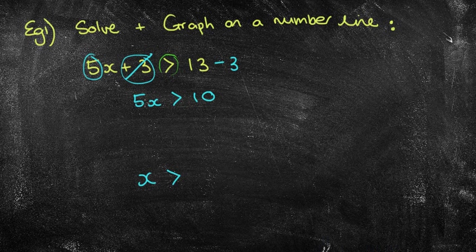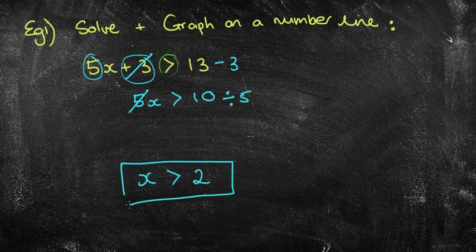Now, a times is holding the 5 and x together. The opposite of times 5 is divided by 5. So x is greater than 10 divided by 5 is 2. So I've now got my solution.